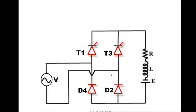Now let's look at the single phase half controlled rectifier. In the half controlled rectifier, we use thyristors as well as diodes. In the positive half cycle, T1 and D2 are in forward bias and T3 and D4 are in reverse bias. In the negative half cycle, T1 and D2 will be in reverse bias and T3 and D4 are in forward bias. In this way we get a DC output voltage, and we can control the output power by controlling T1 or T3. This is the wave diagram of the half controlled rectifier.